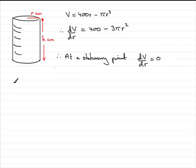So that means that 400 minus 3πR² must equal 0. I need to rearrange this for R, so if I add 3πR² to both sides, I'd have 400 equals 3πR². And if I divide both sides by 3π and then take the square root, I'd have R equals the square root of 400 over 3π.